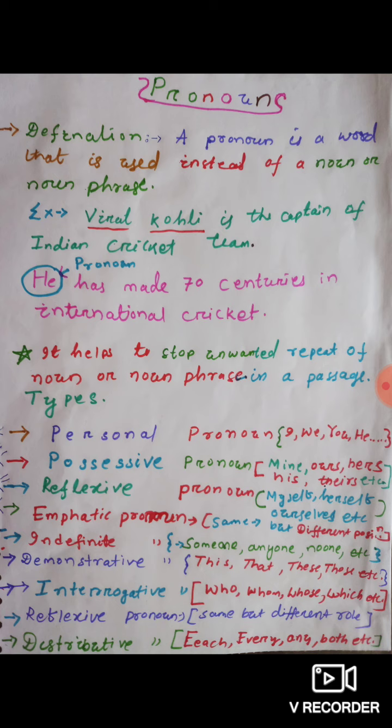But today we focus on personal pronouns, which are very simple to understand and learn. Personal pronouns come from the word 'person.' There are three persons: the first person is the speaker — who is speaking — that is I and we. The second person is whom you speak to. And the next is the third person.